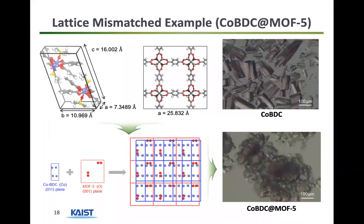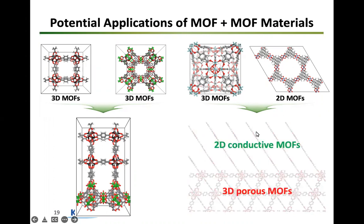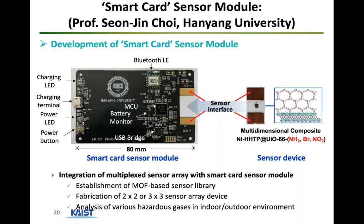We moved on to connecting 3D MOF with 2D MOF, where these 2D MOFs are sensor MOFs. We predict some of these materials inside our computer, and they can be used as chemi-resistive sensors. We work with people creating sensor modules such that the materials we design go inside a sensor interface — a smart card sensor module that goes inside your cell phone, such that if it detects certain gases like NO2 or CO it gives a signal. We're working on this in collaboration with Samsung right now, and it's exciting how we can build these materials inside a computer and have them ported into electronic devices.